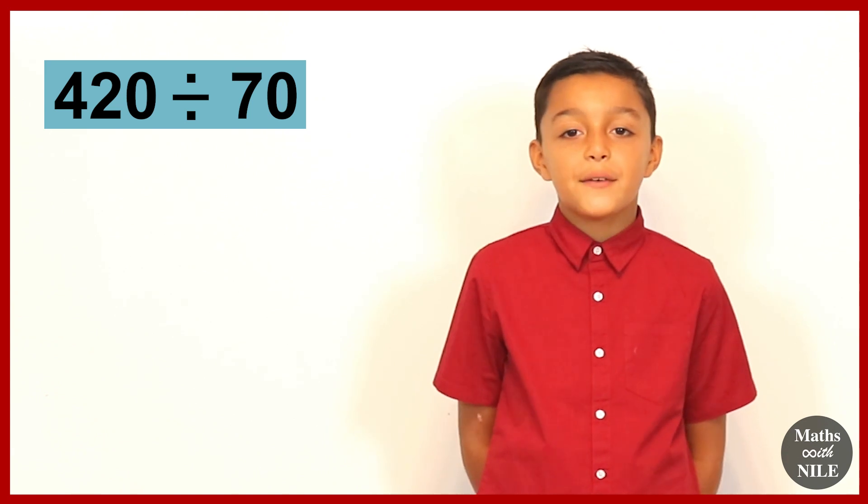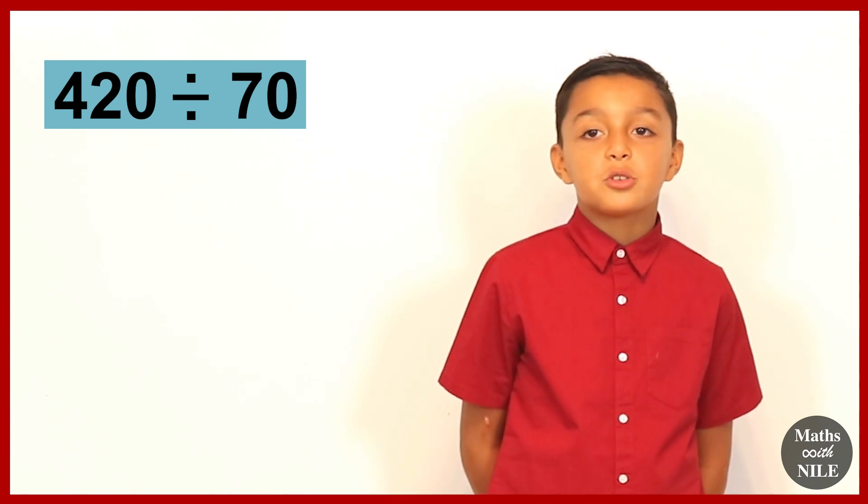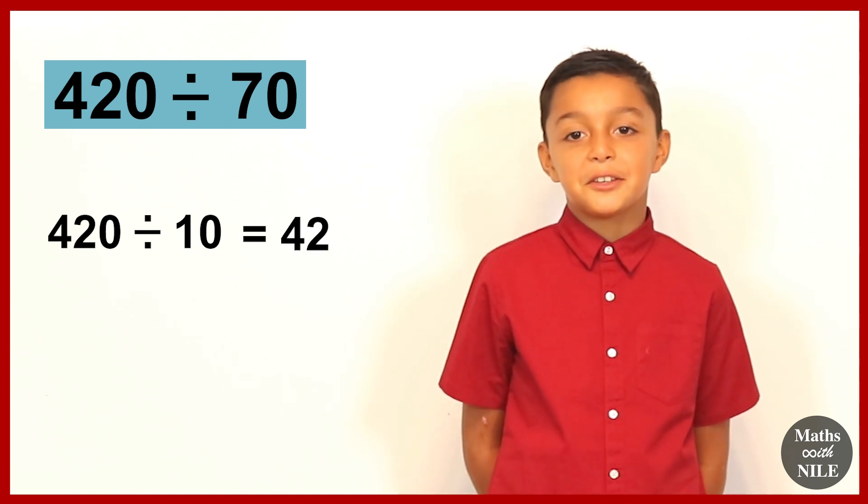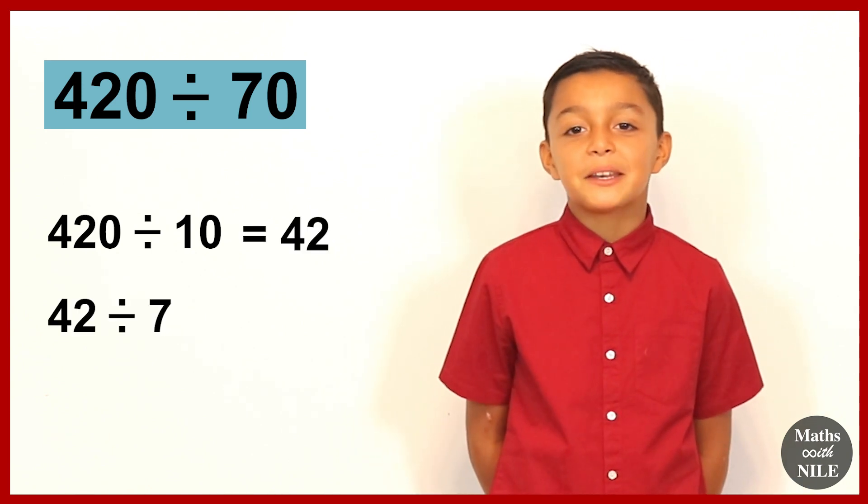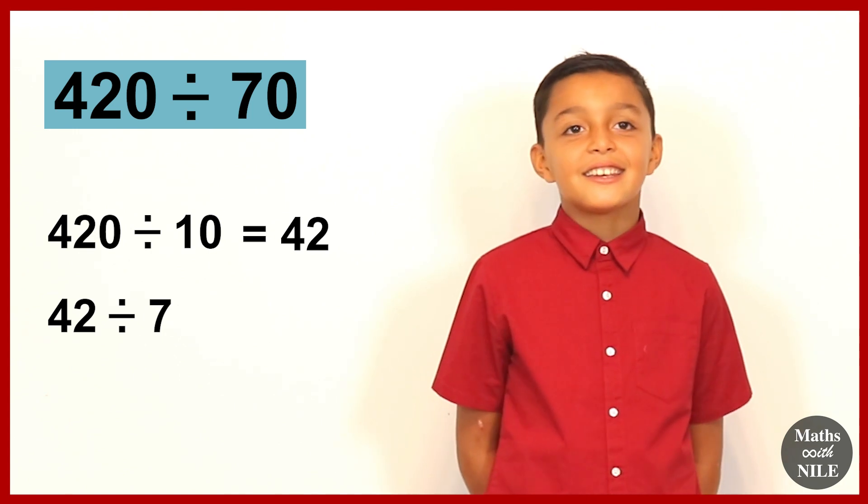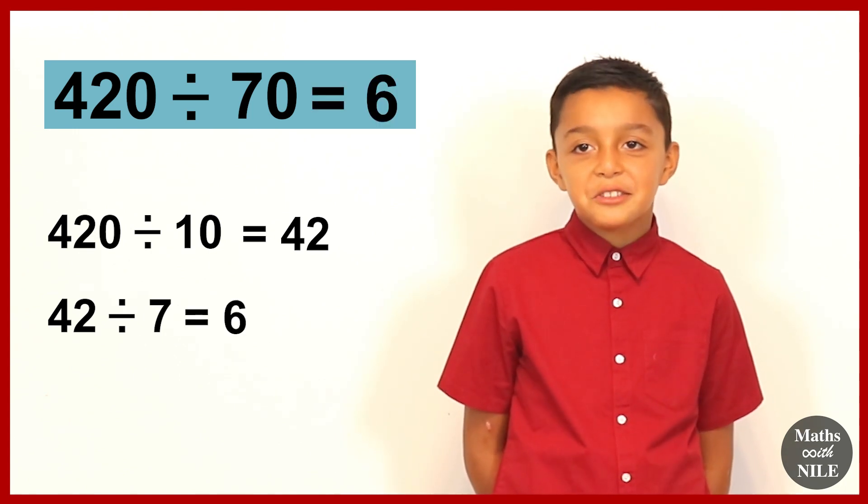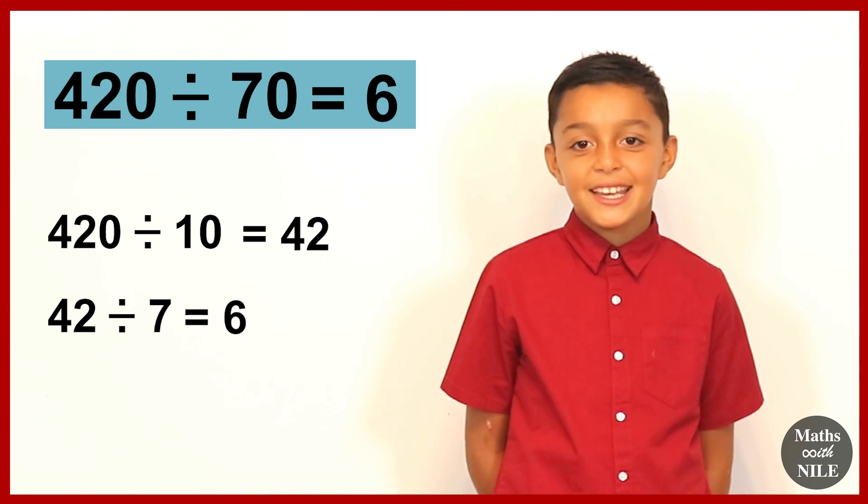Okay, so let's move on to question 22. 420 divided by 70. So we'll do 420 divided by 10, which is 42. And then 42 divided by 7 is 6. So 420 divided by 70 is 6.